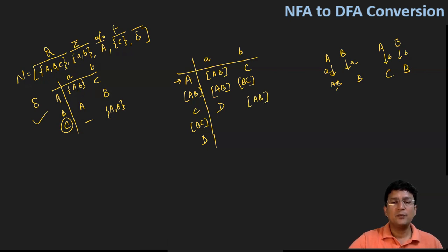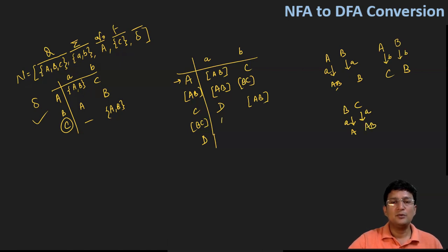Now for BC on symbol small a: B on small a goes to A, and C on small a goes to A as well. So the union of these two gives us state A.